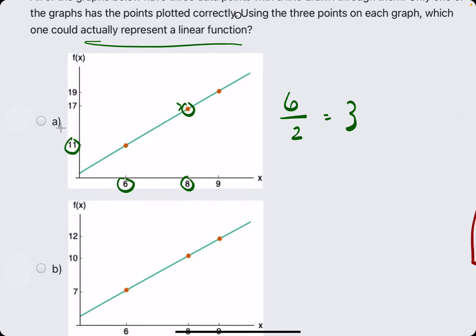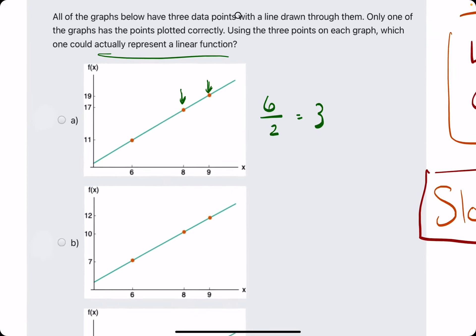So then we just need to verify that the slope between these two points is also 3. If that is the case, this is a linear function. If the slope between these two points does not equal 3, then this is not a linear function, because it doesn't have a consistent slope.